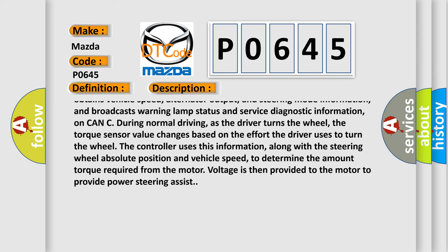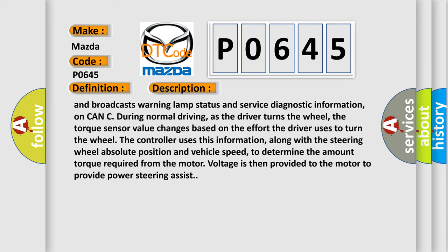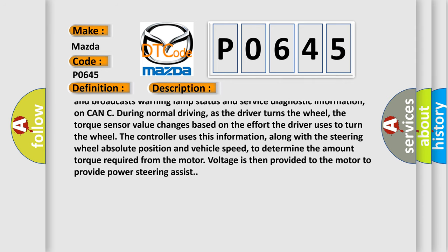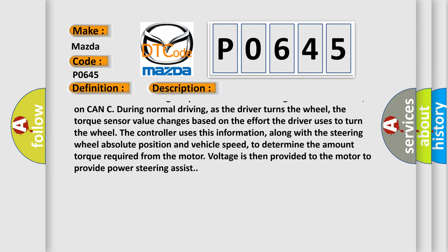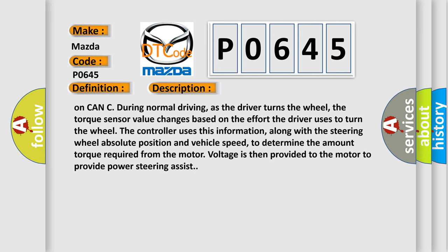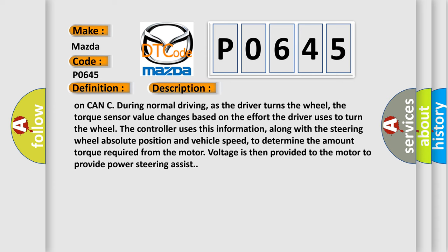As the driver turns the wheel, the torque sensor value changes. Based on the effort the driver uses to turn the wheel, the controller uses this information along with the steering wheel absolute position and vehicle speed to determine the amount of torque required from the motor. Voltage is then provided to the motor to deliver power steering assist.